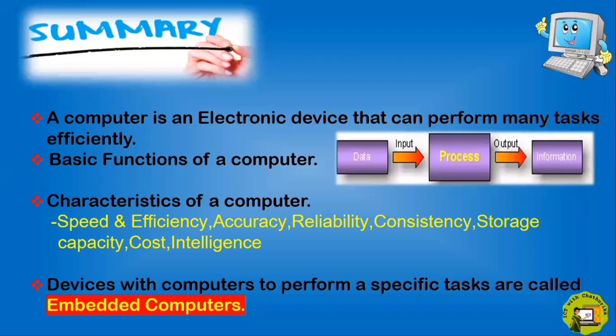This is the summary of the lesson today. Today I discussed about a computer. A computer is an electronic device that can perform many tasks efficiently. Input, process, and output are the basic functions of a computer. Speed and efficiency, accuracy, reliability, consistency, storage capacity, cost, intelligence. These are the characteristics of a computer. Then I finally discussed about devices with embedded computers. Devices with computers to perform a specific task are called embedded computers.